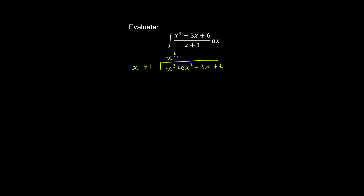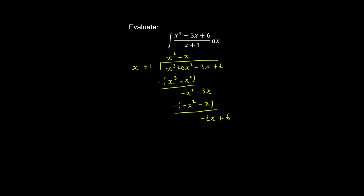x into x cubed goes x squared times; x squared by x is x cubed, and x squared by 1 is x squared. We subtract and get minus x squared, then bring down the 3x term. x into minus x squared is minus x times; minus x by x is minus x squared, and minus x by 1 is minus x. Subtracting gives us minus 3x plus x, which is minus 2x. Bring down 6. x into minus 2x goes minus 2 times; minus 2 by x is minus 2x, and minus 2 by 1 is minus 2. Subtracting gives us 8. Therefore we write the integral as x squared minus x minus 2 plus 8 on x plus 1.